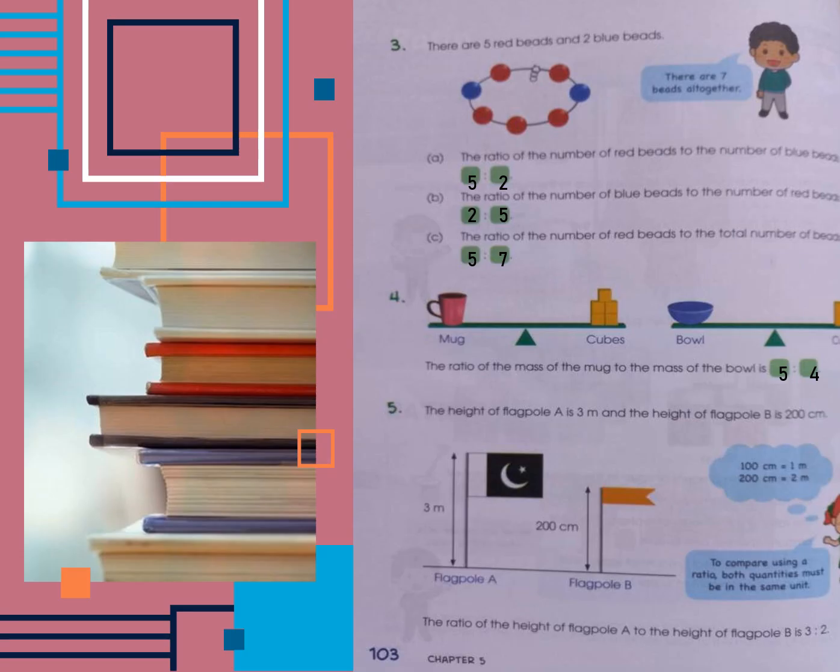In question three, there are five red beads and two blue beads, so there are seven beads altogether. In part A, the ratio of the number of red beads to the number of blue beads is five to two, because there are five red beads and two blue beads. In part B, the ratio of the number of blue beads to the number of red beads is two to five, because we are finding the ratio in terms of blue beads, and there are two of them.